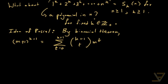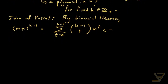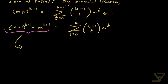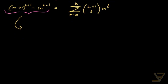What we're going to do is siphon off the top degree term, so we get (m+1) to the k+1 minus m to the k+1 equals the sum of (k+1 choose t) times m to the t. And this is just ripe for telescoping, so we're going to take the sum of a whole bunch of these and see where that leads us.